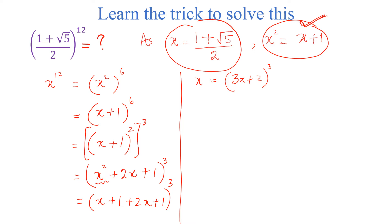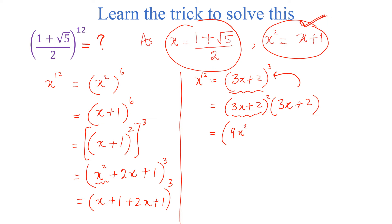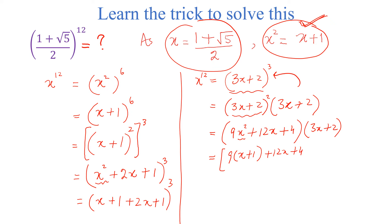This is x^12 equal to (3x plus 2)³. We can write (3x plus 2)³ as (3x plus 2)² times (3x plus 2), which gives (9x² plus 12x plus 4) times (3x plus 2). Now again x² is equal to x plus 1, so we substitute 9 times (x plus 1) plus 12x plus 4, all times (3x plus 2).